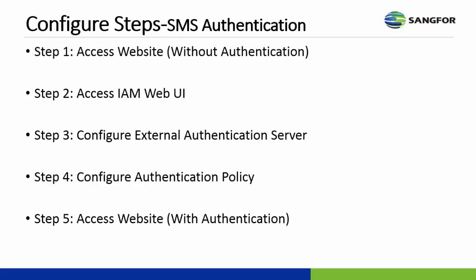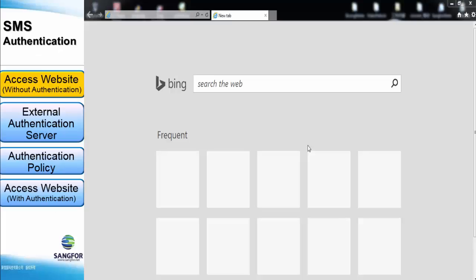The configuration steps for SMS authentication are: Step 1 — access the website without authentication; Step 2 — access the IM web UI; Step 3 — configure the external authentication server; Step 4 — configure the authentication policy; Step 5 — access the website with SMS authentication. Now let us start the SMS authentication configuration.